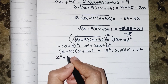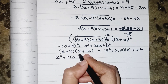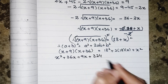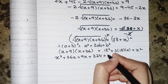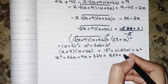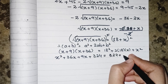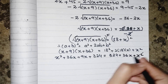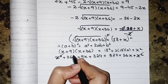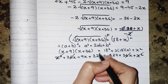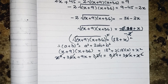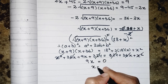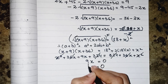Expanding the left side: x times x gives x squared, x times 36 gives 36x, x times 9 gives 9x, and 9 times 36 gives 324. On the right side, 18 squared equals 324, and 2 times 18 gives 36x, plus x squared. Both x squared terms cancel on both sides, 36x cancels on both sides, and 324 cancels on both sides. The remaining term is 9x equals 0, so x equals 0.